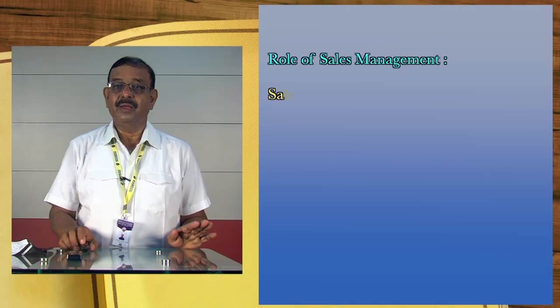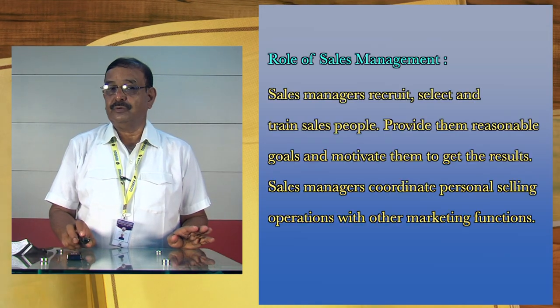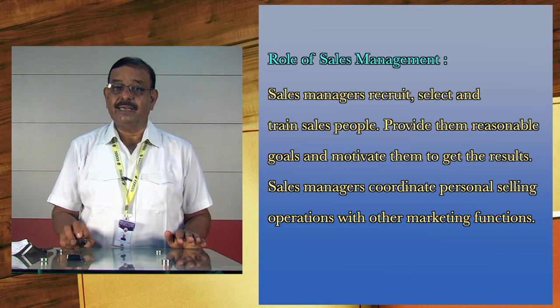We have discussed in part 1 that sales management is basically management of the personal selling function. The personal selling function includes recruiting, selecting, equipping, assigning, routing, supervising, motivating, and compensation of the sales force. So what are the basic role and functions of sales managers? There are some other aspects also which we shall explore.